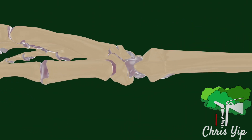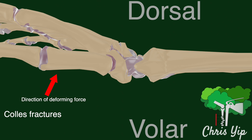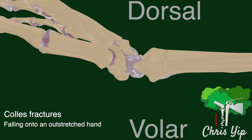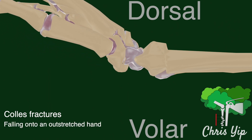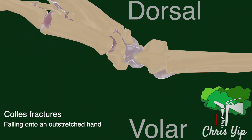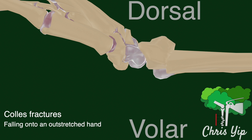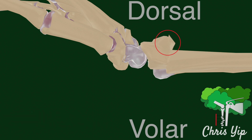The most common type are known as Colles' fractures, which are usually due to falling onto an outstretched hand. The distal fragment will have a dorsal displacement, dorsal angulation, and radial shortening, which in turn can lead to dorsal comminution.